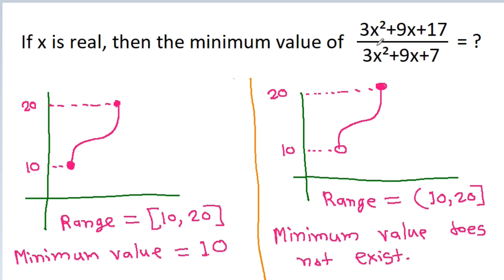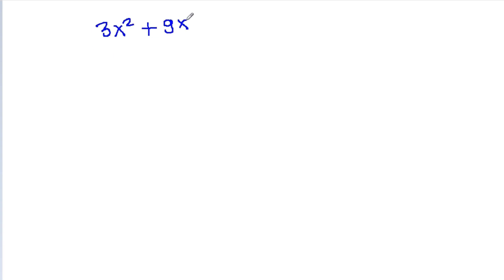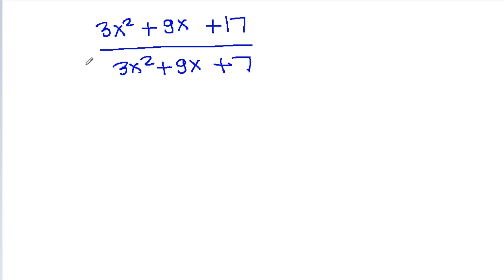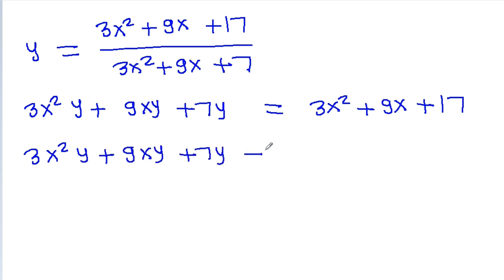Now we have to find the minimum value of (3x² + 9x + 17) / (3x² + 9x + 7). Let this expression equal y and cross multiply: 3x²(y−1) + 9x(y−1) + 7y − 17 = 0. This is a quadratic equation in x.